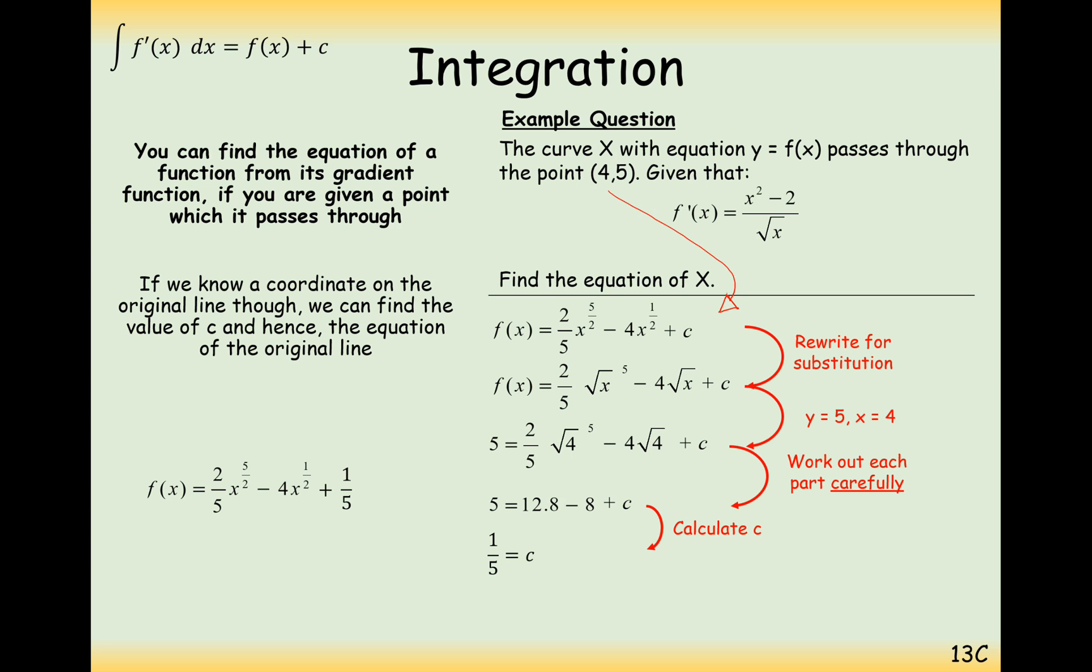So now what's left for us to do is just put this on at the end of the function, replacing it with the value c. It's a bit like when you do y equals mx plus c. It's effectively the same thing. Two fifths x to the power of 5 over 2 minus 4x to the half plus a fifth. So two-step process, integration, and then substituting in a coordinate.